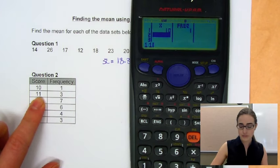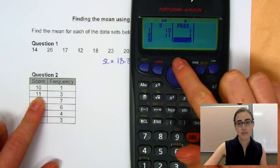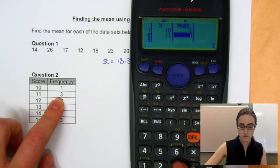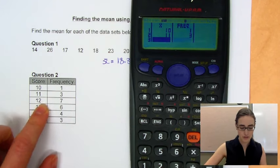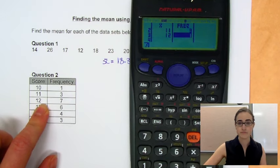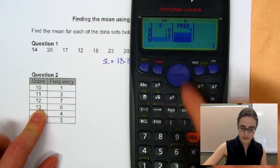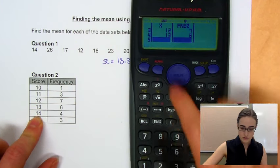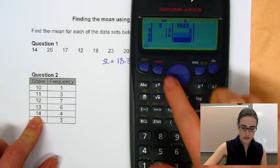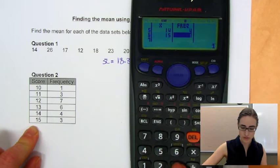So we'll enter 11, and hit equals. Now to change that frequency, we can use these arrows and go back up. We want that to have a frequency of 3. So we'll press 3 and hit equals. So we can come back over. 12, which has a frequency of 7. 13 has a frequency of 6. 14 has a frequency of 4. And our last one was 15, and it had a frequency of 3.